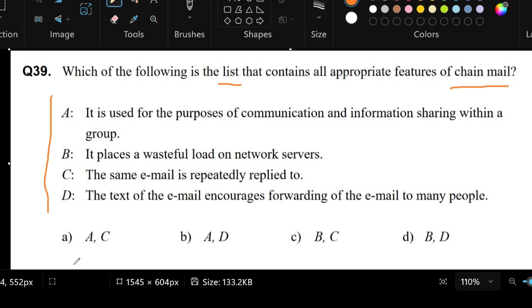If you look at the choices here at the bottom, we need to choose a combination of two letters. For the first statement, Statement A: it is used for the purposes of communication and information sharing within a group. Although this seems to be okay, we're going more towards a set of emails that is sent to annoy people or to solicit some kind of information. A chainmail isn't supposed to be for communication and information sharing. It's more like to annoy people, to solicit something that they're not really interested in. So letter A, we put an X mark here.